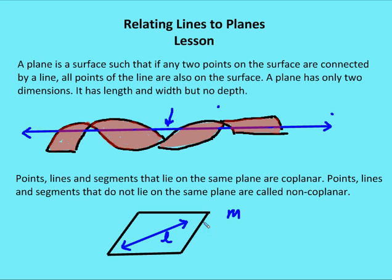The second thing you need to know about a plane is it has only two dimensions — length and width, but no depth. The plane extends indefinitely in those two directions: width-wise and length-wise. So it has infinite value in terms of length or width, but no value in terms of depth.